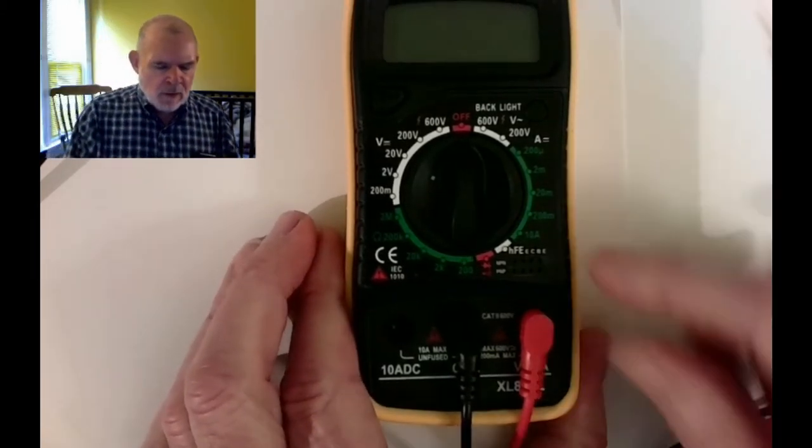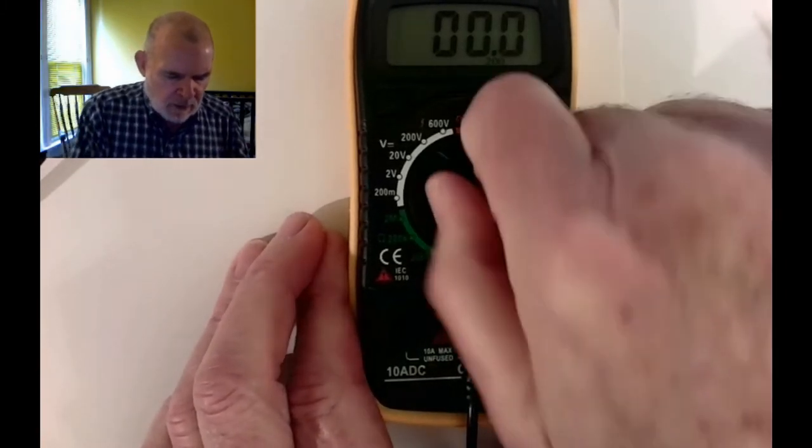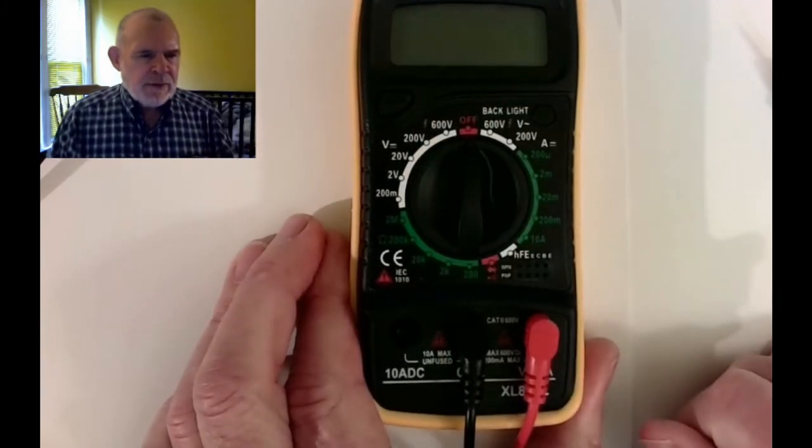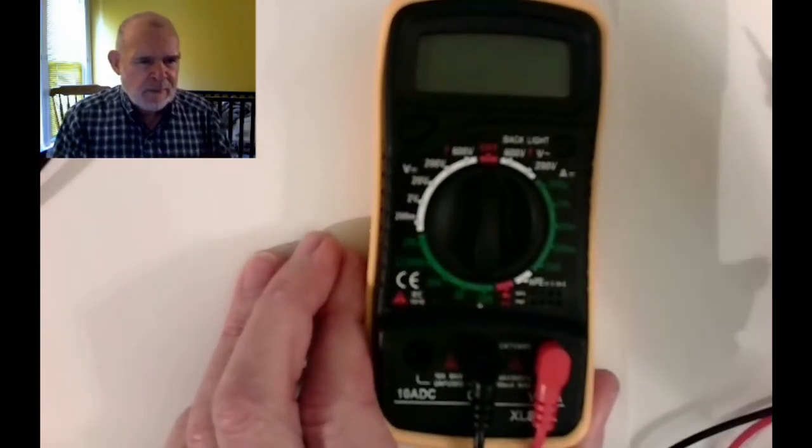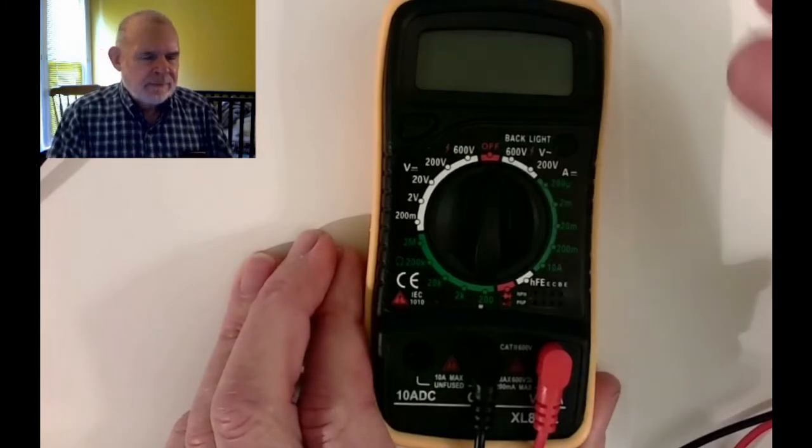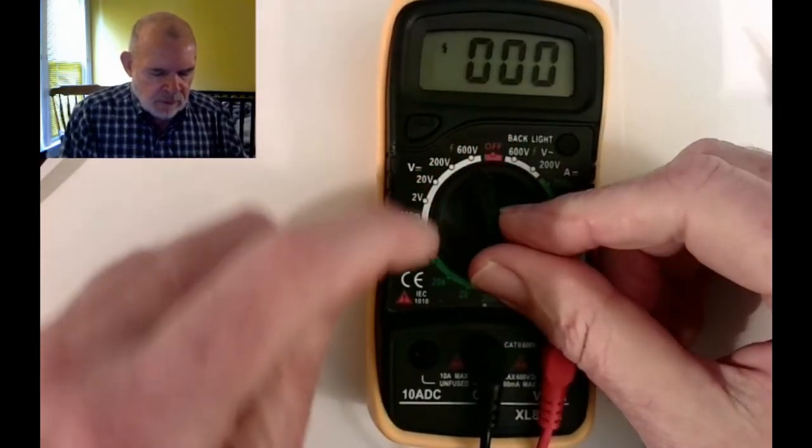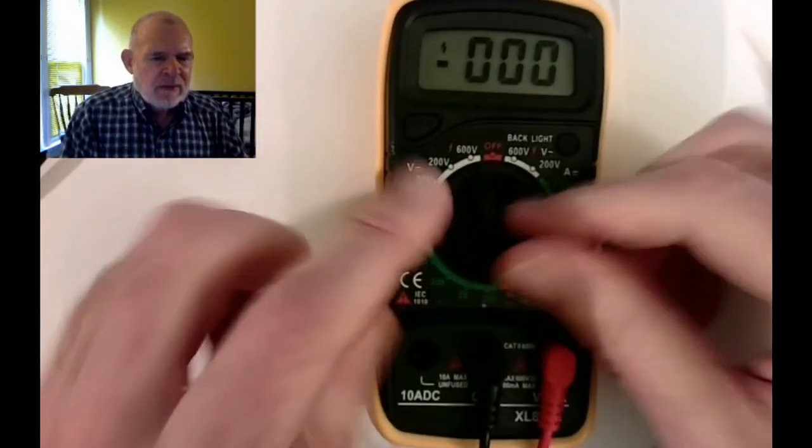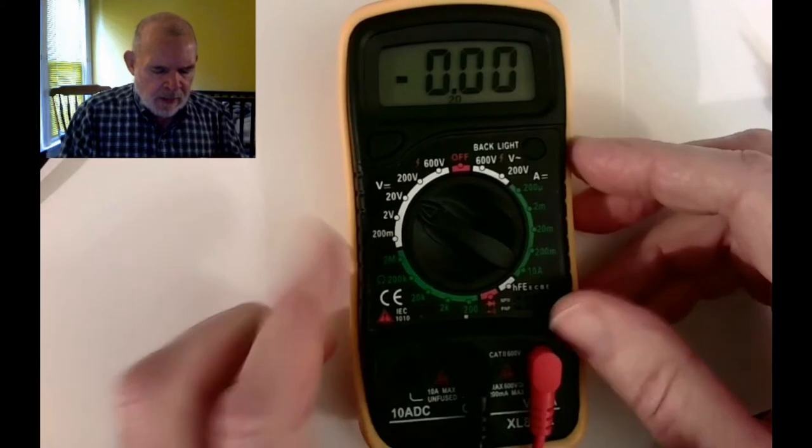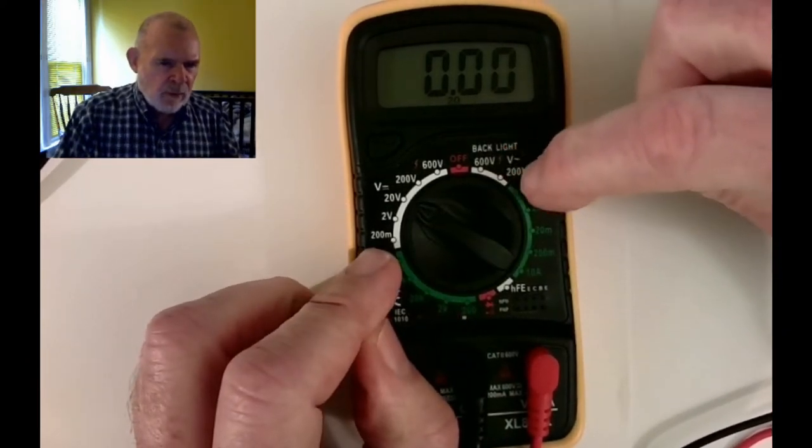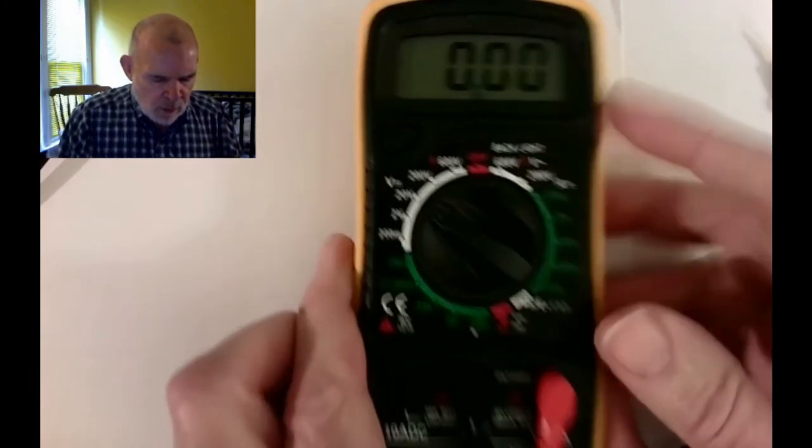Let's look at the ranges. This knob is a range selector. Starting with off at the top, you have to remember after taking your readings to turn it back off, or you're just wasting your battery. The first set of ranges in white are direct current voltage scales. On the other side are the AC voltage ranges that we're not going to use.